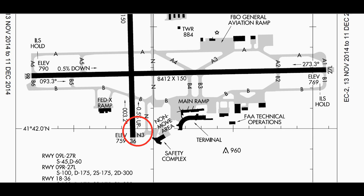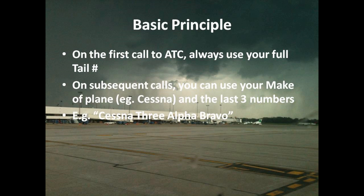On your initial contact — especially coming into an airport — use your full tail number: November 123 Alpha Bravo. After air traffic control has acknowledged it, you can shorten it to the last three characters. If our plane is a Cessna 172 with that tail number, we can call ourselves Cessna 3 Alpha Bravo. Using just the last three numbers or letters keeps communications shorter and more concise, so the frequency isn't cluttered with too much talk.